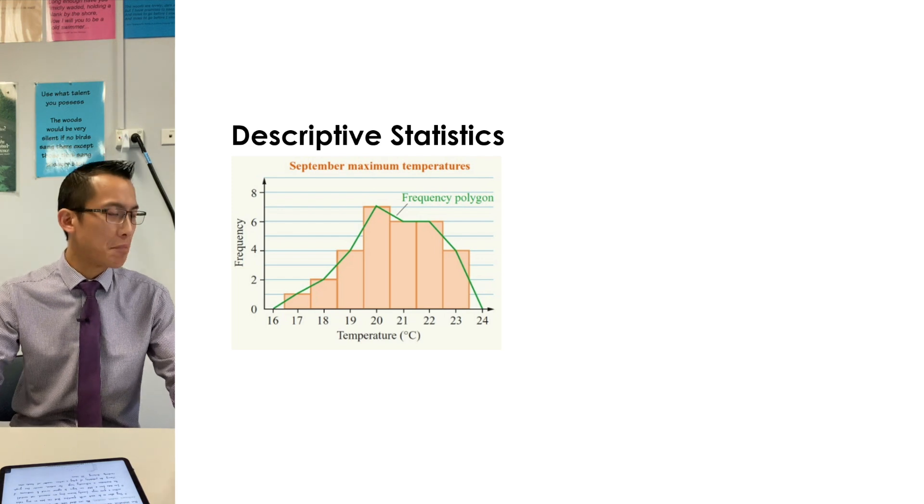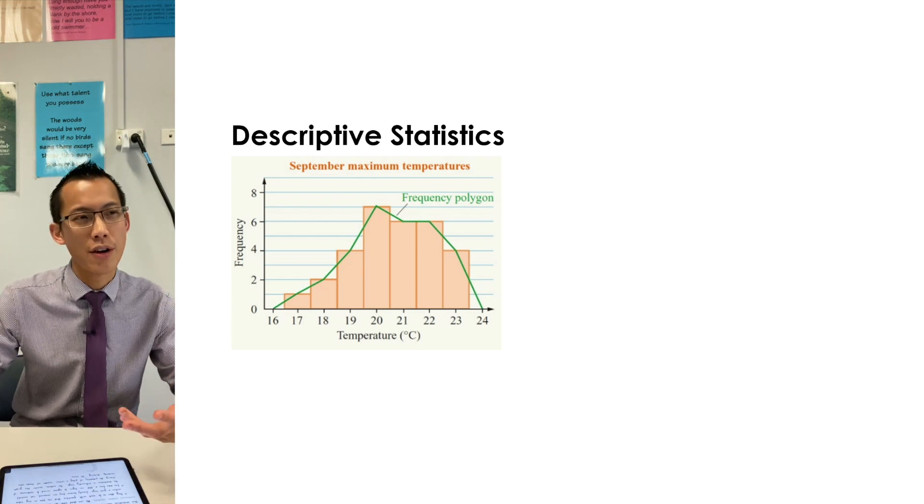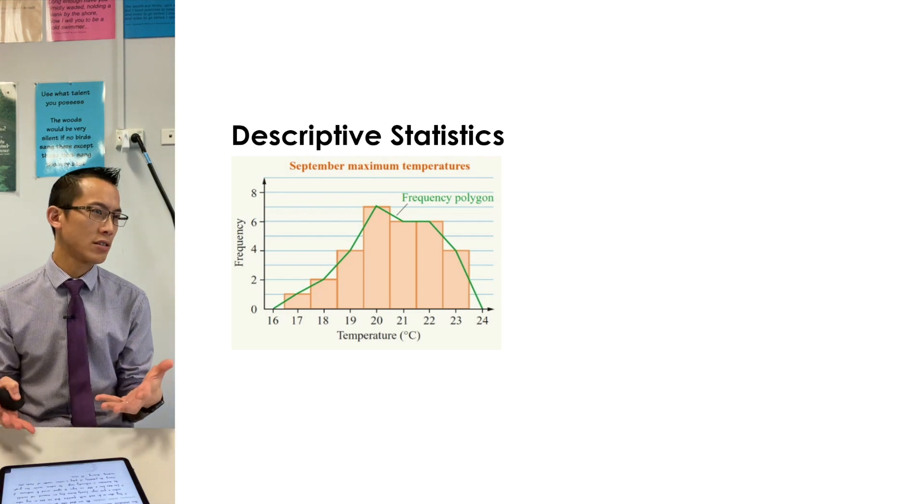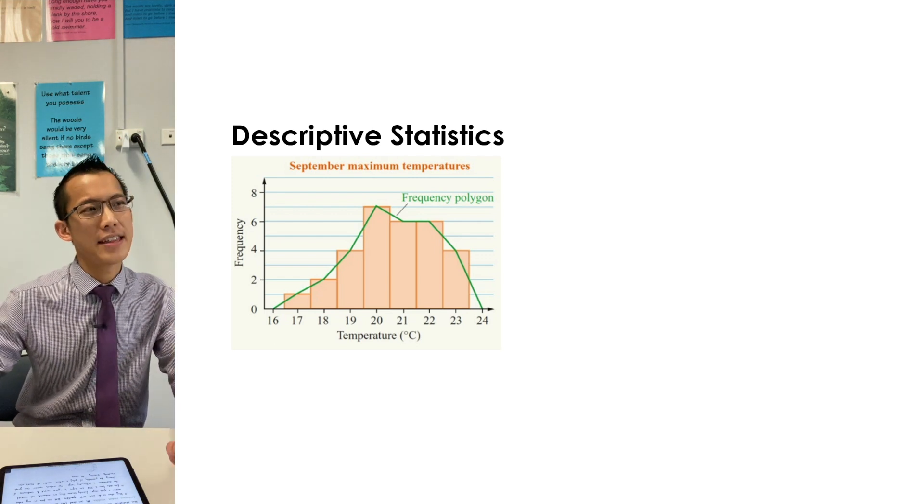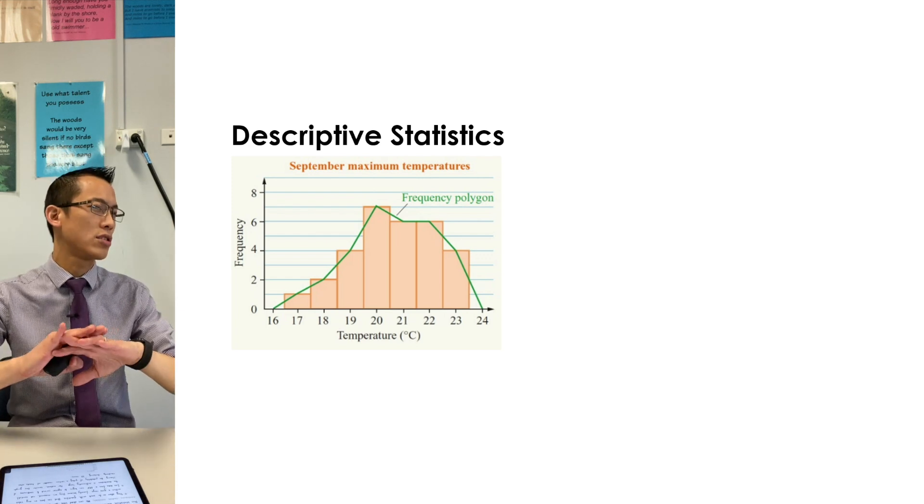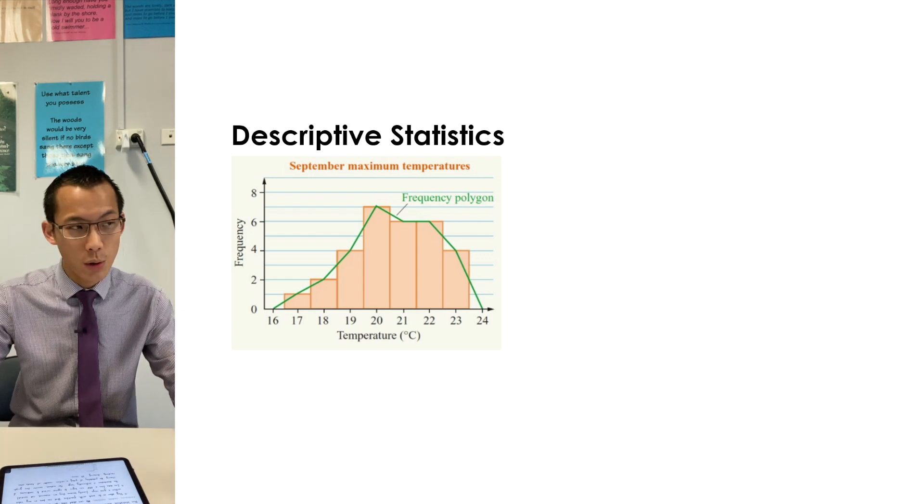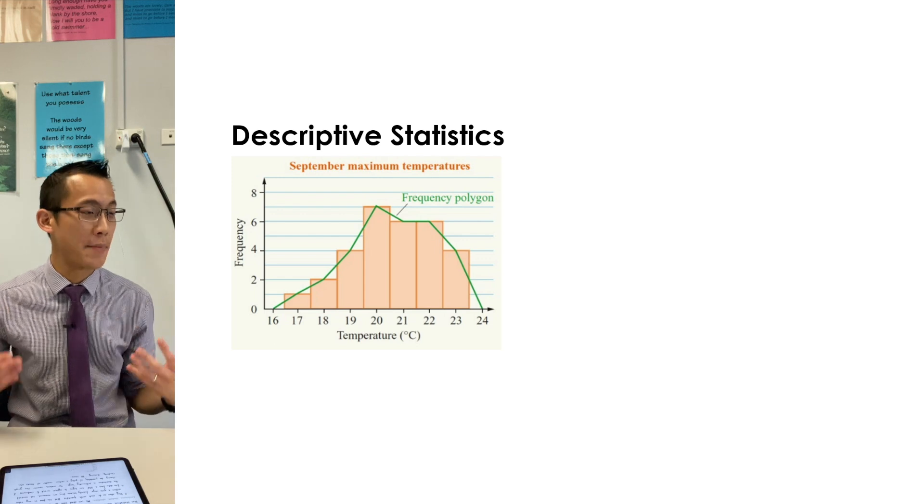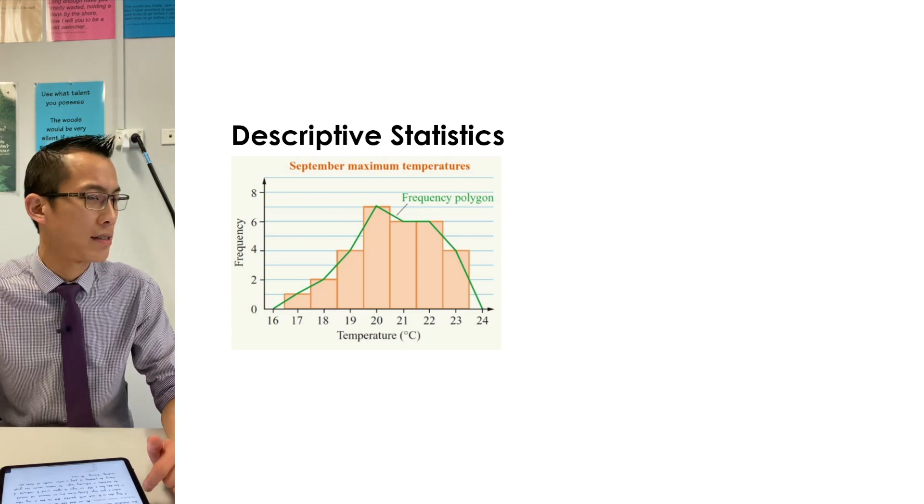These are things like mean, mode and median, so measures of central tendency or measures of location. And then you had things like interquartile range, standard deviation, so these are measures of spread. I hope that was ringing bells from previous years when we looked at statistics.